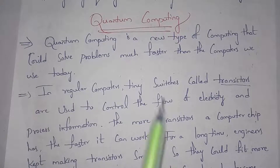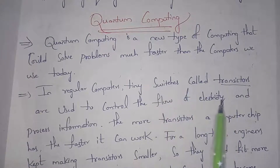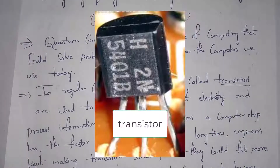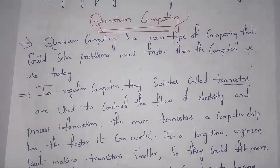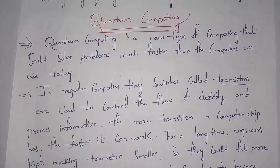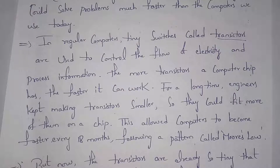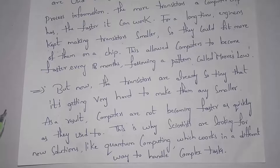Normally in our regular computers we use small tiny switches called transistors. By using these transistors we can control the flow of electricity and process information. Transistors are present in your computer chip — how many transistors your computer chip contains, that much fast your computer will work. If transistors are very small then you can place more transistors on your computer chip. That is why engineers are making transistors smaller every 18 months by following Moore's Law.